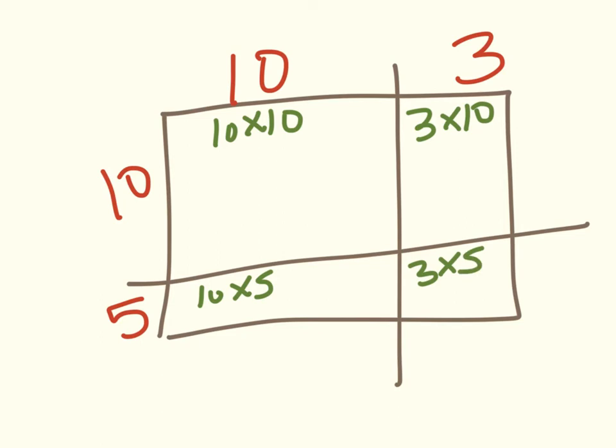Okay, so now we've completed the next step. And now we're thinking, how can we get all of these together? So I'm going to solve this, and then we're going to add up all of the products. So 10 times 10 is 100. 3 times 10 is 30. 10 times 5 is 50. And 3 times 5 is 15.